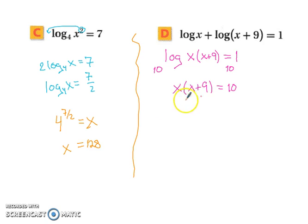So let's continue simplifying. This is going to give us x squared plus 9x equals 10. Subtract 10 from both sides. So we've got x squared plus 9x minus 10 equals 0.